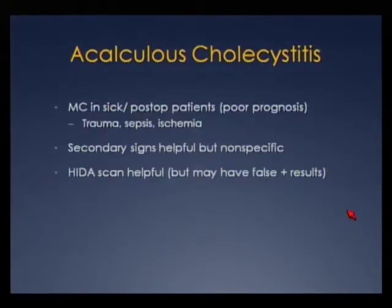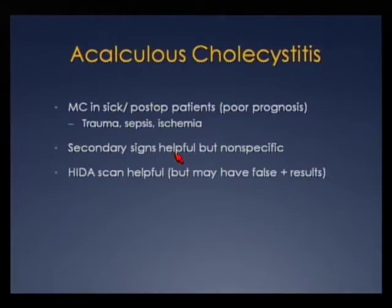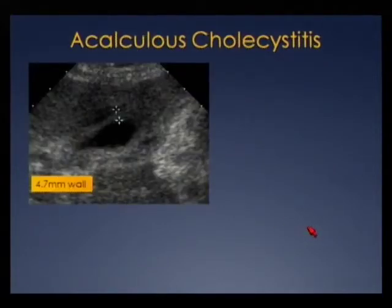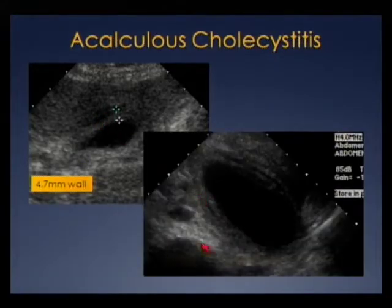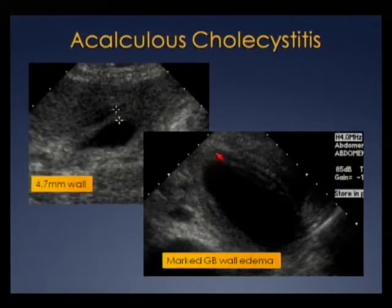Acalculous cholecystitis typically occurs in sick or post-op patients due to trauma, sepsis, or ischemia. Secondary signs of cholecystitis can help decide if you have acalculous cholecystitis, but they're not always specific, and HIDA scan can be helpful though may give false positives. Here's a patient with signs and symptoms of acute cholecystitis — thickened gallbladder wall, pericholecystic fluid, but no stones — called acute acalculous cholecystitis. Here's another case showing marked gallbladder wall edema with typical clinical history.